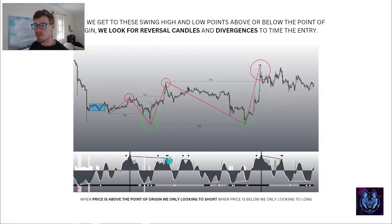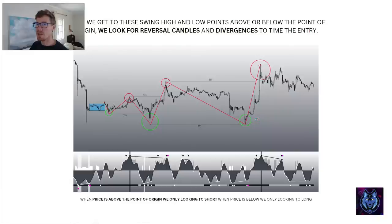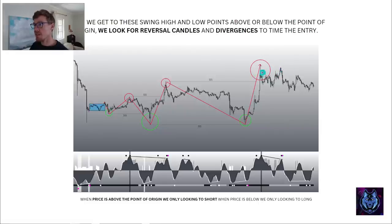Price travels up and we get another divergence here. We see an indecision candle — confirmation one; divergence — confirmation two; above the point of origin — confirmation three. Fantastic short entry. Price travels all the way down — another divergence, confirmation one; indecision candle with rejection wicks to the downside, confirmation two; happening below the point of origin, confirmation three. Then price goes all the way up, taps into this liquidity, we get another big rejection candle. We didn't quite get a divergence there, but the divergence came here — this would have been a great entry point. Stop loss above the wick, we could have taken profits down here or waited for price to travel further.